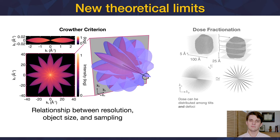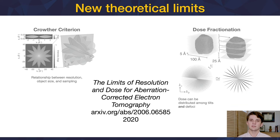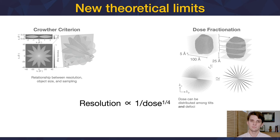So we've defined the new relationship between resolution, object size, and sampling. The dose fractionation theorem, originally defined by Hegerl and Hopp, has also been updated for aberration-corrected tomography. This states that you can choose the total dose of reconstruction by distributing dose among the tilt series and the defocus series. For more information on the dose fractionation theorem, you can see our paper titled The Limits of Resolution and Dose for Aberration-Corrected Tomography, available on archive. It's important to remember that aberration-corrected tomography is still governed by the same absolute dose requirements of traditional tomography. These state that 3D resolution scales inversely with the fourth root of dose.